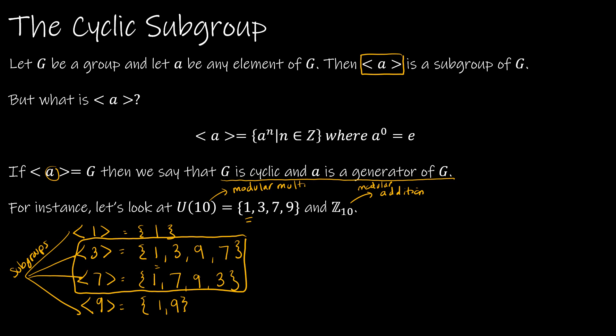So what can I say about 1? And I'm not going to go through all of the elements. But <1> would just be 1 times 0, 1 times 1, 1 times 2, 1 times 3, 1 times 4, and so on. So I'm going to get all of the elements. So 1 is going to generate the entire set.